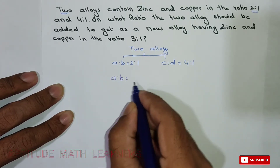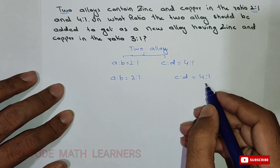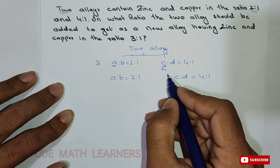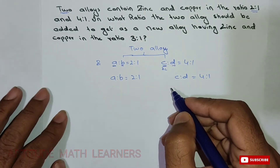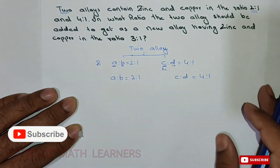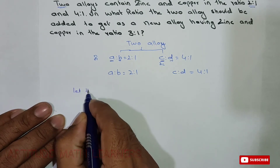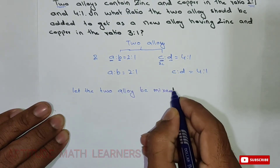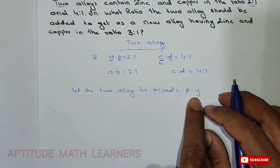So the two alloys: A:B is 2:1 and C:D is 4:1. Here A and C represent zinc (Z1 and Z2 in two different alloys) and B and D represent copper. To find in what ratio the two alloys should be added, we let the two alloys be mixed in ratio X:Y.